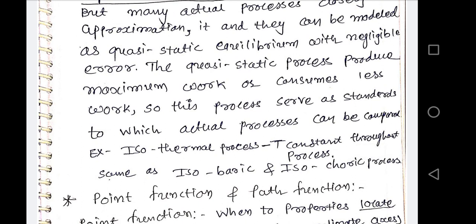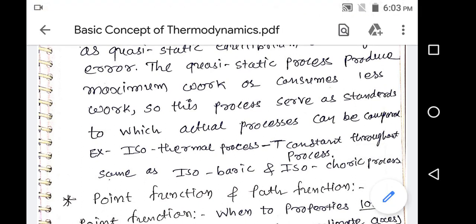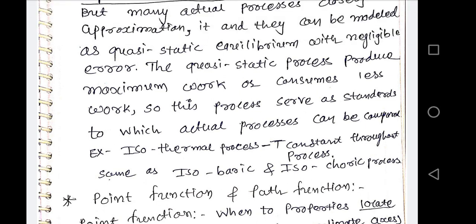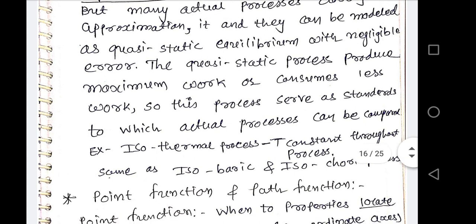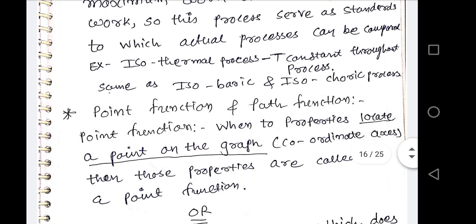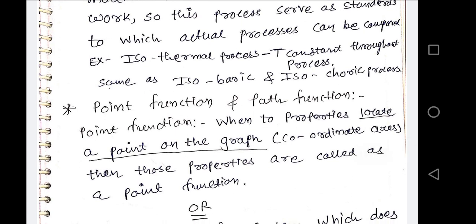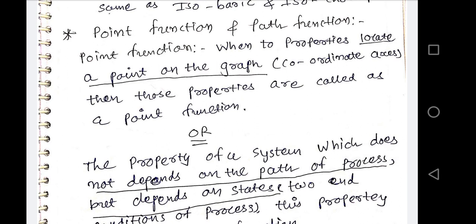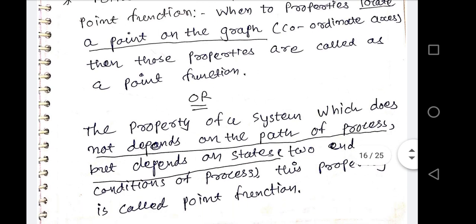Now we are discussing about point function and path function. This is very important. A point function means: when two properties locate a point on a graph in coordinate axes, those properties are called a point function. In thermodynamic language, the properties of the system which do not depend on the path of the process are known as a point function.